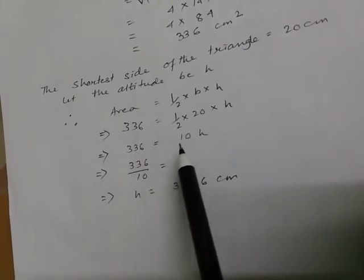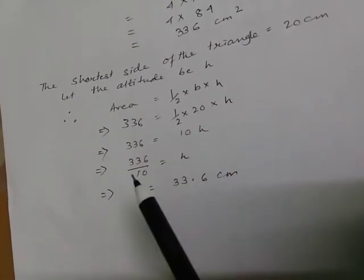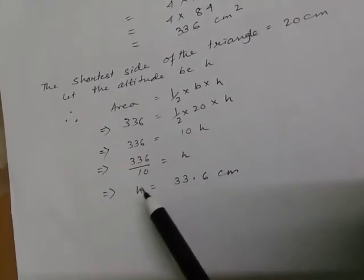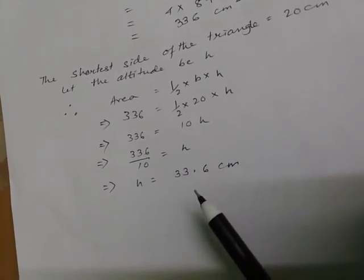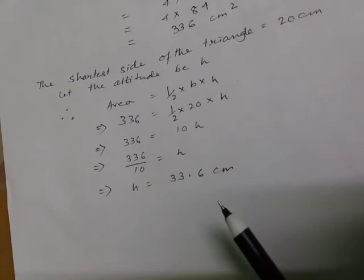The area we have already found out, that is 336, equal to half into 20 into H. So, 336 equal to 10 H. And therefore, H equal to 336 by 10. Therefore, H equal to 33.6 centimeter.